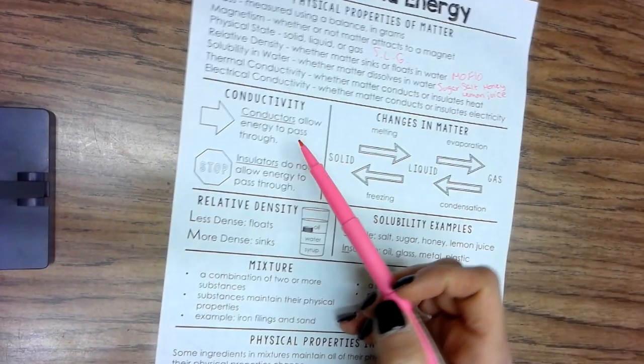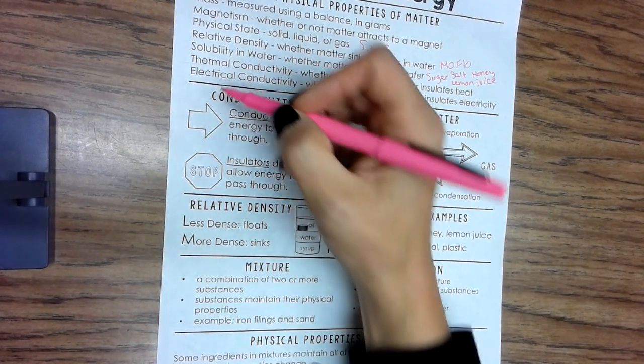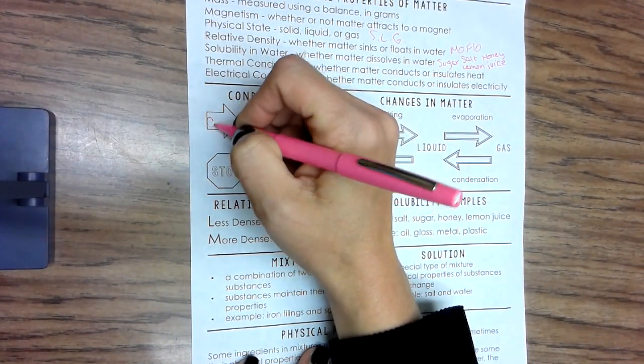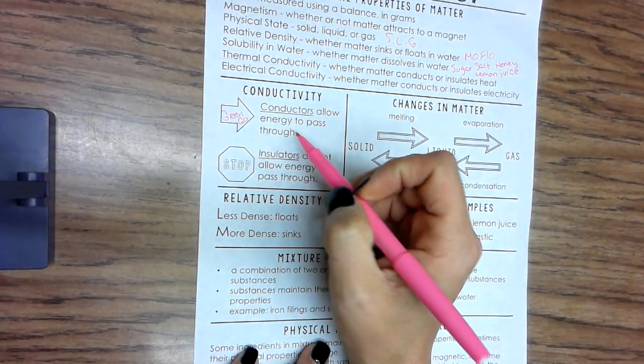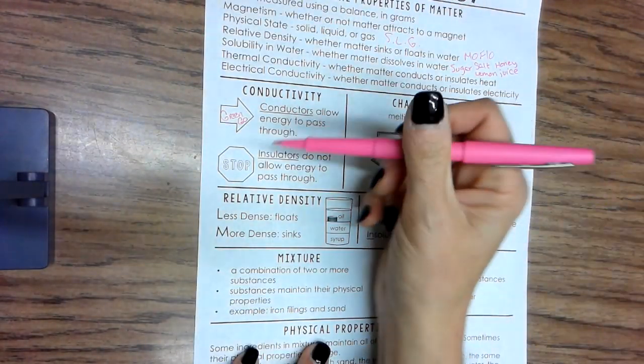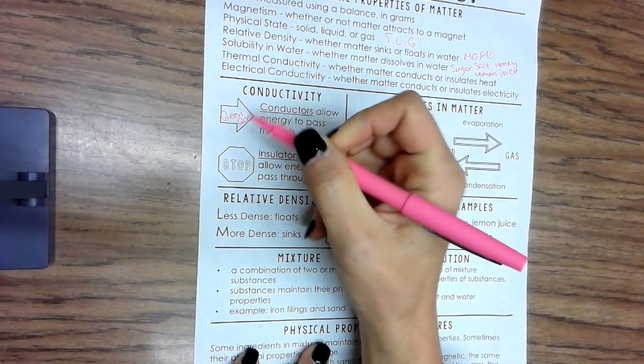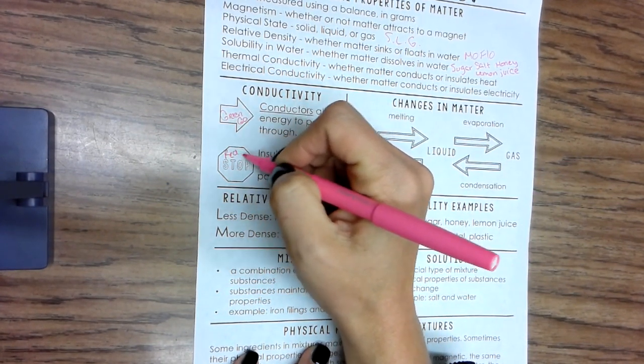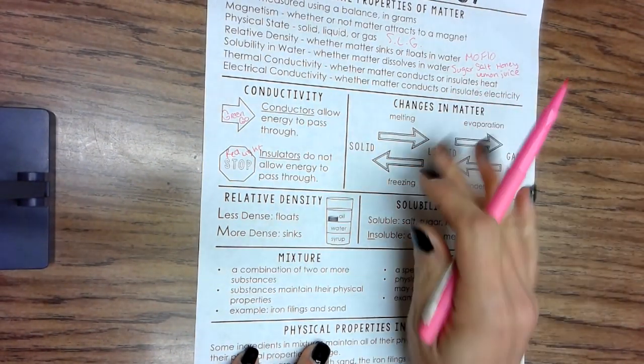Moving up to conductivity here, if it's a conductor it's a green light - see the arrow, green light go - because the energy can flow through it. But if it's an insulator, it stops the energy. Red light.